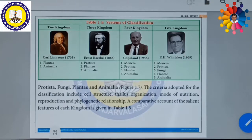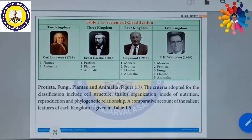Whether the cell structure is similar or different, the thallus organization — how the structure of thallus is arranged — what is the mode of nutrition and how they are taking food, what type of reproduction they follow — whether it is sexual reproduction, asexual reproduction, binary fission, or fragmentation — and what type of phylogenetic relationship exists between one organism and another: on the basis of all these, Whittaker classified organisms into Monera, Protista, Fungi, Plantae, and Animalia.